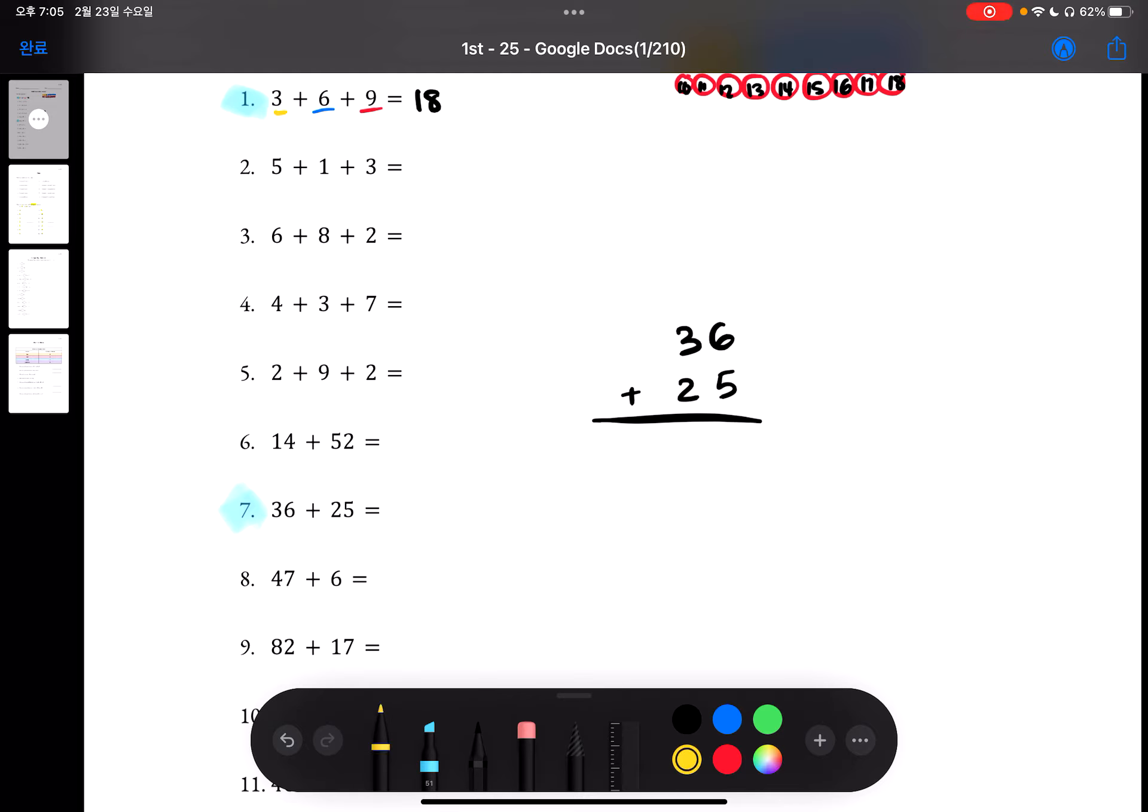Start adding from the ones place. 6 plus 5 is equal to 11. So we're going to put 11 like this. And 3 plus 2 is equal to 5. 5 plus 1 is equal to 6. So we're going to have the answer of 61 for number 7.